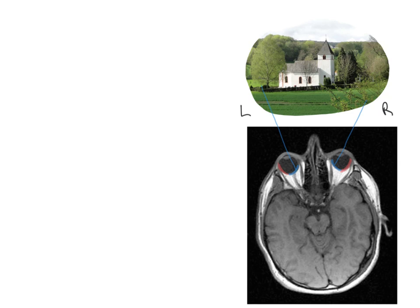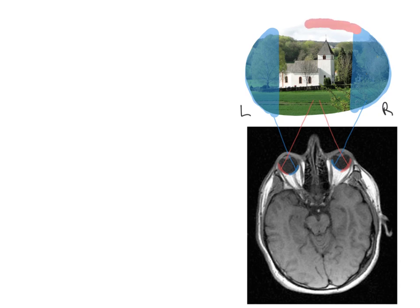Now let's do the same for the temporal retinas. Here's the temporal retina through the lens to its part of the image, and here's the temporal retina in the left eye through the lens to its part. So we can colour the image based on which part of the retina is seeing it. In blue, this region is seen by the nasal retina of the right eye, and this region is seen by the nasal retina of the left eye. Then in red, we draw in this large central area seen by the temporal retina of both eyes — this is the central visual field.